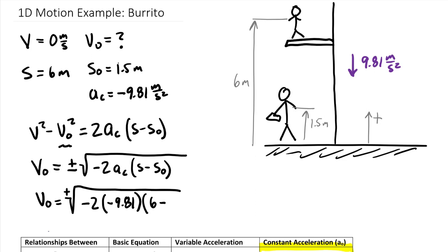Notice here that I have a negative times a negative. That's good because we can never take the square root of a negative number and get an imaginary result. And so we end up with a velocity of 9.4 meters per second, which is great because I know that you have a finely calibrated arm and that you can throw this burrito at exactly 9.4 meters per second.